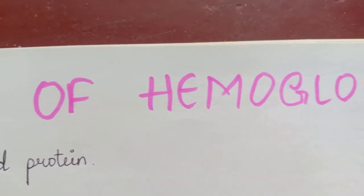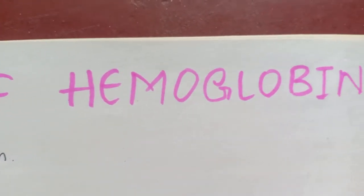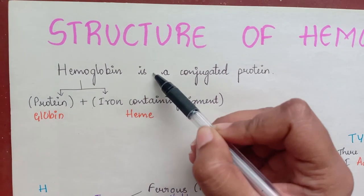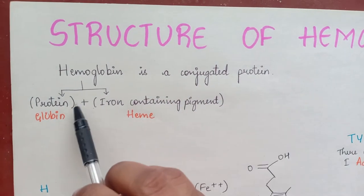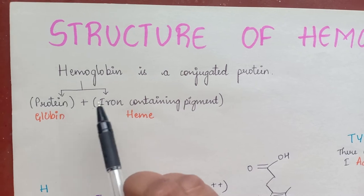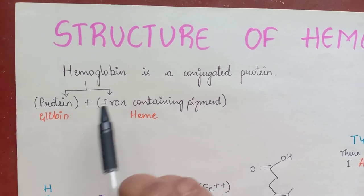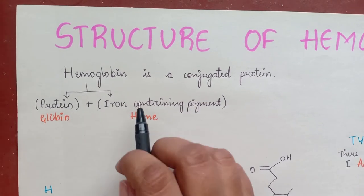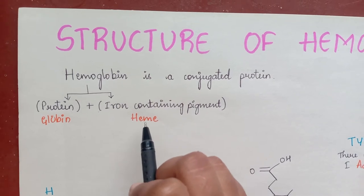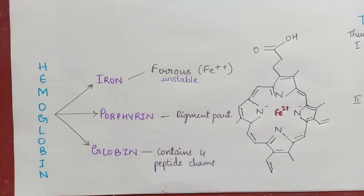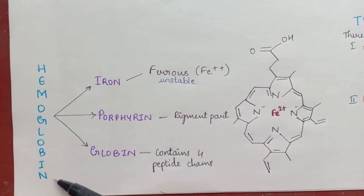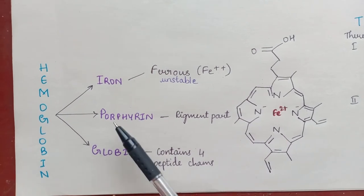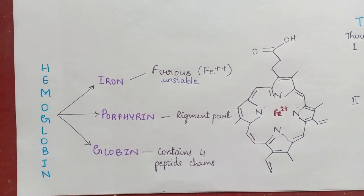Structure of hemoglobin: hemoglobin is a conjugated protein. It consists of a protein combined with an iron-containing pigment. The protein part is globin and the iron-containing part is heme. Hemoglobin consists of iron, porphyrin, and globin.